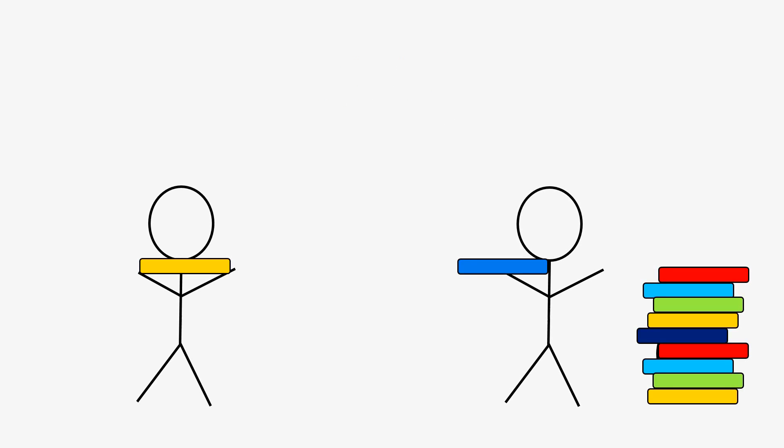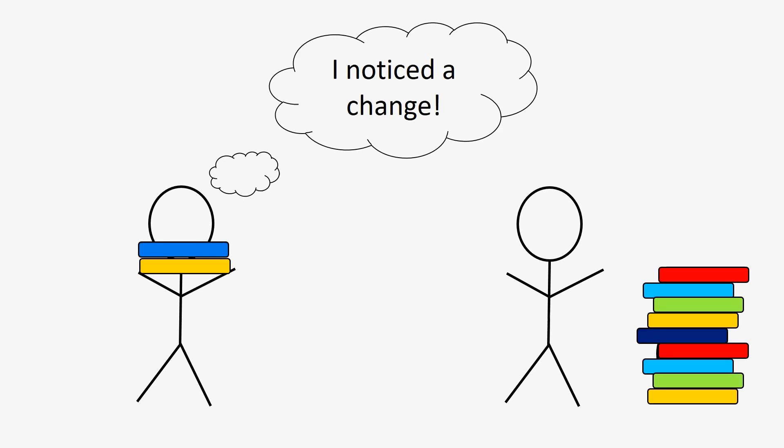Let's say you have one book in your hands already and he passes you a blue book, so now you have two books. You're thinking to yourself, 'I noticed a change in weight — the load I'm carrying got a little bit heavier, in fact it got twice as heavy.' You add one book and you notice a change in weight. Seems pretty simple, right? But it's not that simple.